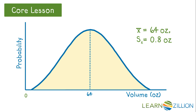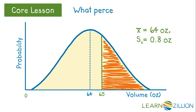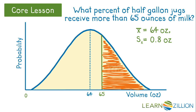Suppose that the jugs being filled can hold 65 ounces if filled to the very top. In this case, the machine dispensing more than 65 ounces would result in overflow, which the manufacturer would want to avoid. If the volumes are distributed as described, what percentage of half-gallon jugs receive more than 65 ounces of milk?